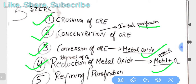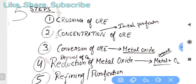Reduction means removal of oxygen. Whenever reduction comes, it means removal of oxygen; oxidation means the binding of oxygen. So we have to remove oxygen and then we get the metal. When oxygen is removed from metal oxide, we get only metal. At this point the metal is still in impure form, but our 99% target is completed.